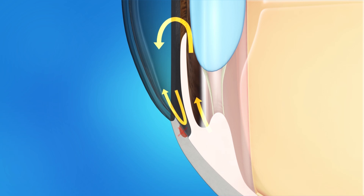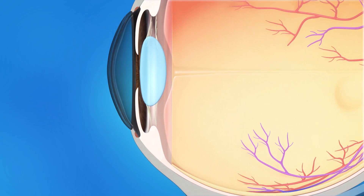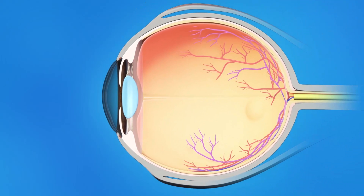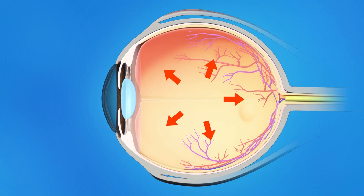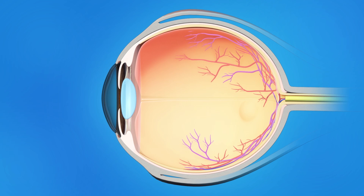If fluid doesn't flow out of the drainage angle properly, eye pressure increases and damages the optic nerve. A trabecular bypass stent provides a new and more direct pathway for fluid to leave the inside of the eye.